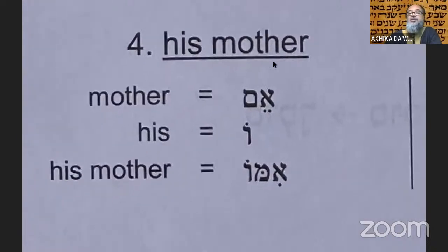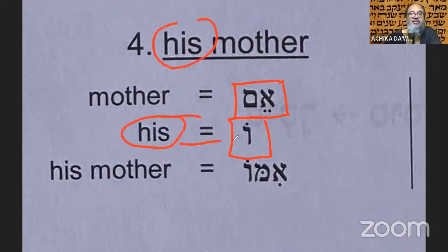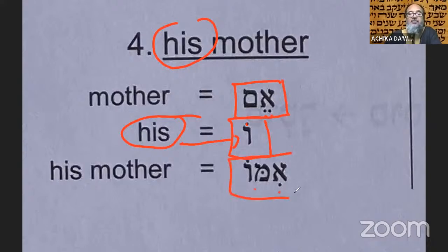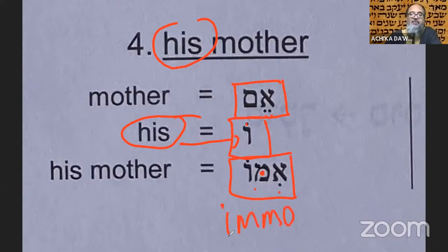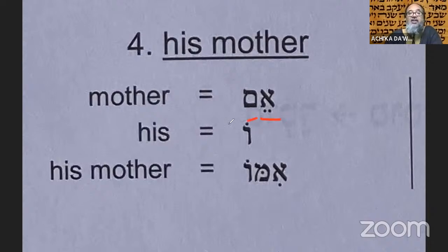To say 'his mother,' you take aim (mother) and add the vav-with-dot: imo. The dot in the center of the mem means you geminate it — make two m sounds. So it's im-mo, 'his mother.' The final mem becomes a regular mem once it's no longer the last letter, and you get imo. That's how the word transforms.